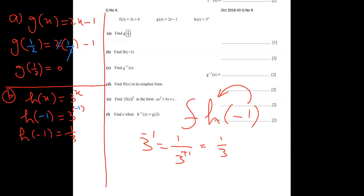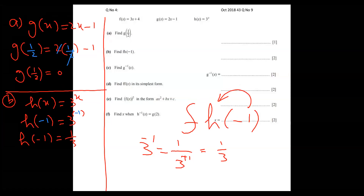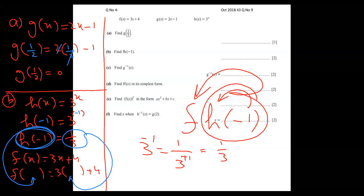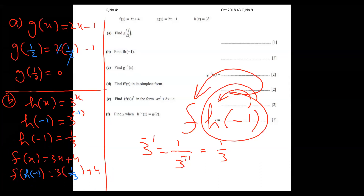Now replace this whole value into f. I copy f, which is 3x plus 4, and leave empty spaces for x. I put the function name f of x in one space and the value one by three in the other space.